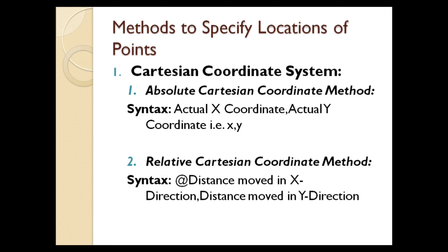The syntax for the absolute Cartesian coordinate method is the actual x coordinate comma actual y coordinate. You just need to enter the actual coordinates of the figure — just x, y, simple. No other symbol, no bracket, no at-the-rate sign, nothing.